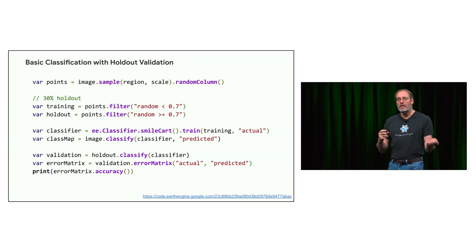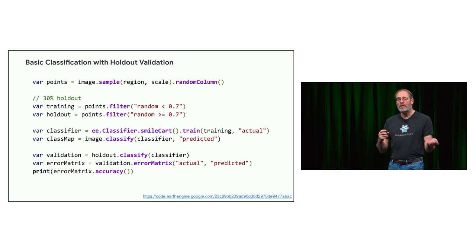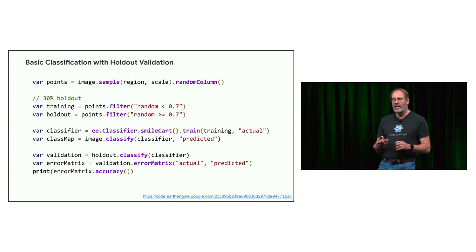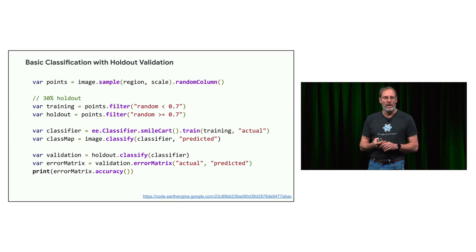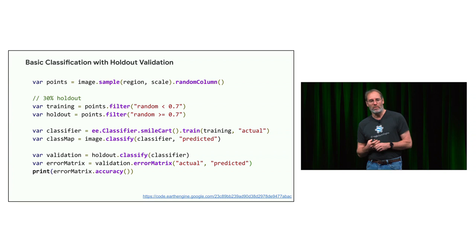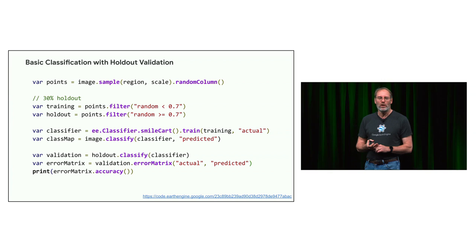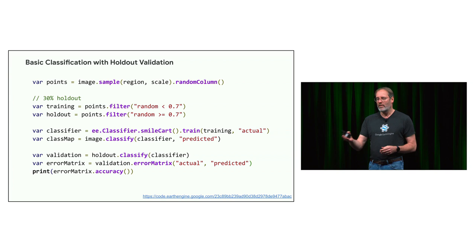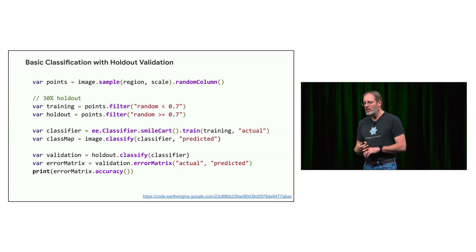In this example, we slice that table into two pieces: one for training and another for holdout validation. It's easy to do this once you're in a table — you add a random column and filter on it, so anything less than 0.7 becomes training and anything greater than 0.7 becomes holdout. The random number is uniform between 0 and 1, so this is a good way to get an almost exact number of points. With 10,000 points, you'll get about 7,000 in training — though since it's statistical, it could vary slightly.